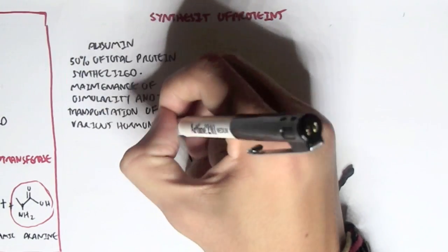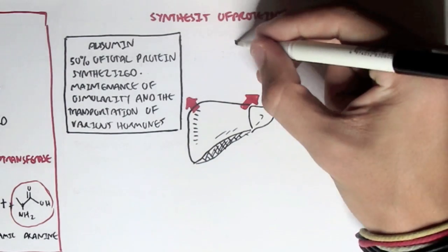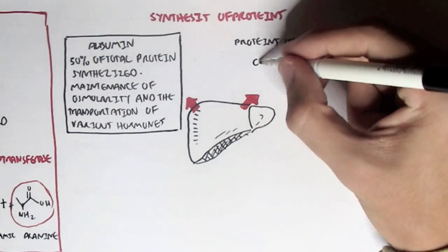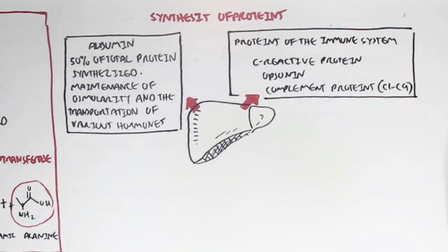The liver also synthesizes proteins for the immune system, such as the C-reactive protein, opsonin, which helps for opsonization of a pathogen, and also it synthesizes plasma complement proteins, C1-C9. Complement proteins are important for destroying an invading pathogen.